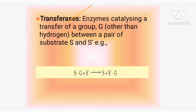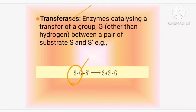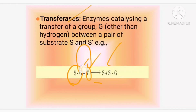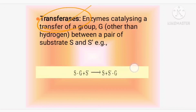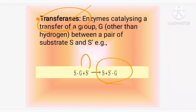The second class is transferases — as the name suggests, they help in transfer of functional groups. A functional group such as an alcohol OH group, aldehyde CHO group, or ketone group present in one substrate is transferred to another substrate. So the group G from substrate S is transferred to substrate S-dash, giving product S-dash-G.